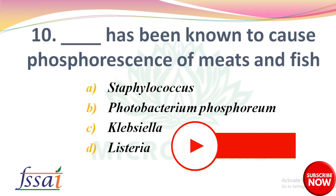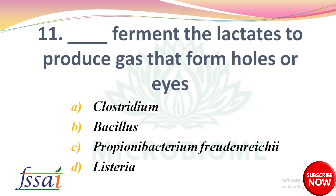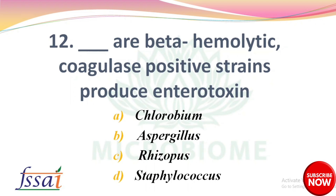Next: Dash has been known to cause phosphorescence of meats and fish — options: Staphylococcus, Photobacterium phosphoreum, Klebsiella, Listeria. The right answer is option B, Photobacterium phosphoreum. Next: Dash ferments the lactates to produce gas that forms holes or eyes — options: Clostridium, Bacillus, Propionibacterium. Next: Dash beta-hemolytic coagulase-positive strains produce enterotoxin — options: Chlorobium, Aspergillus, Rhizopus, Staphylococcus. The right answer is option D, Staphylococcus.